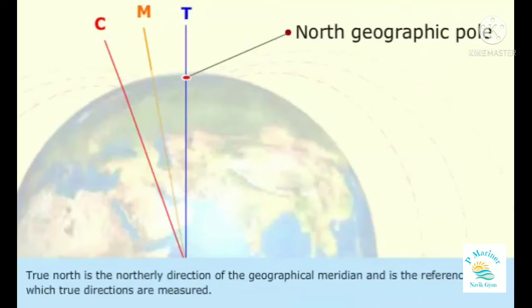True north is the northerly direction of the geographical meridian and is the reference from which true directions are measured.